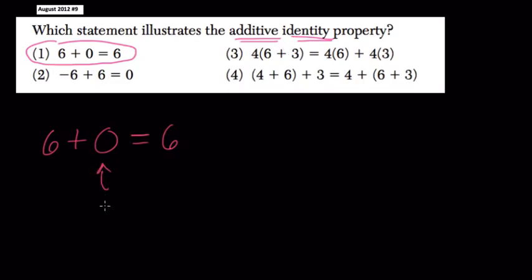So 0 is the additive element. But this is the additive identity because it does not change the number 6. Multiplicative identity would be 1. You multiply by 1 and nothing changes.